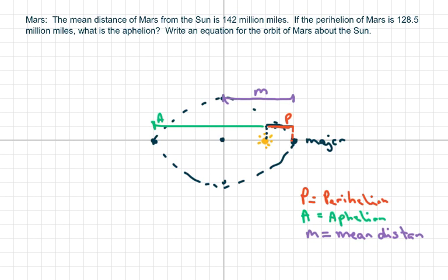Hi everyone. This is the second of our problems. We have the mean distance from Mars to the sun is 142 million miles. So I wrote out here some of the vocab you need to know. The mean distance is the distance from the center to the end of the major axis.